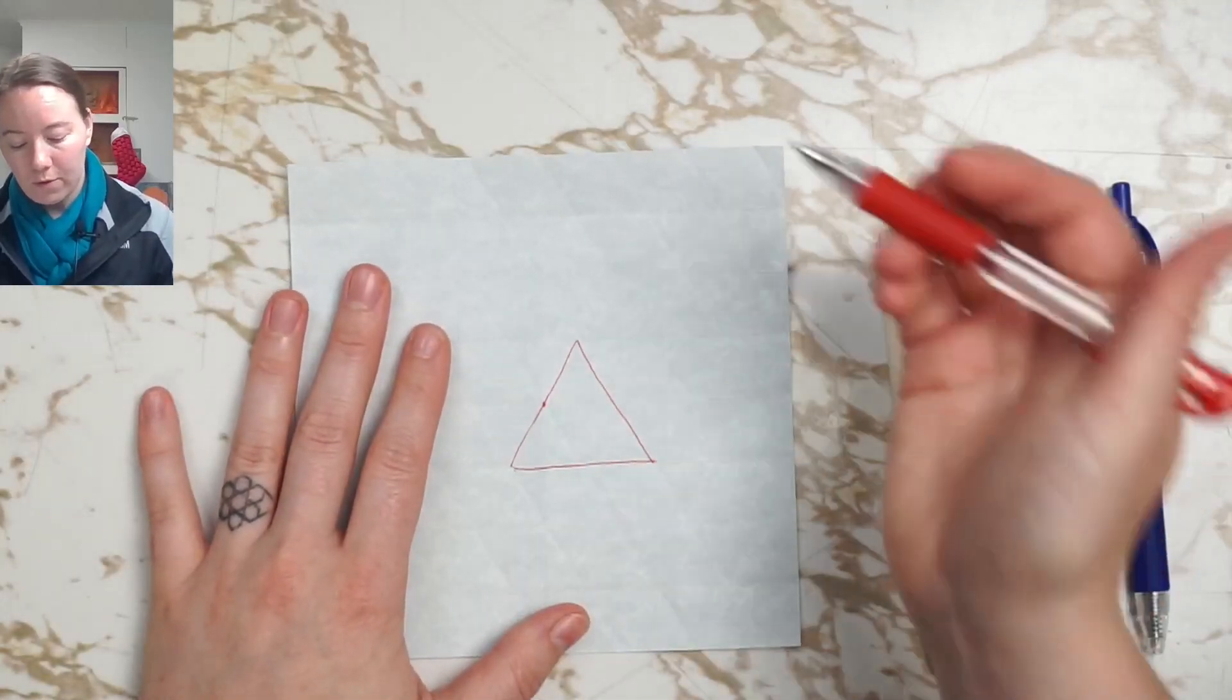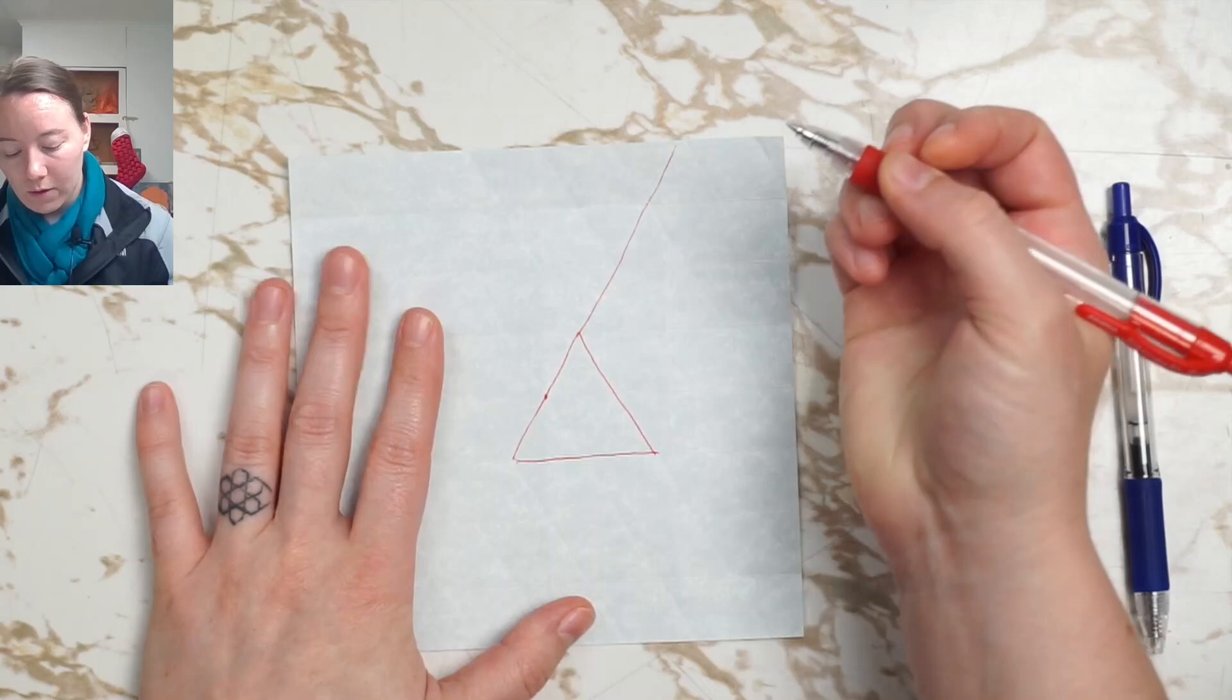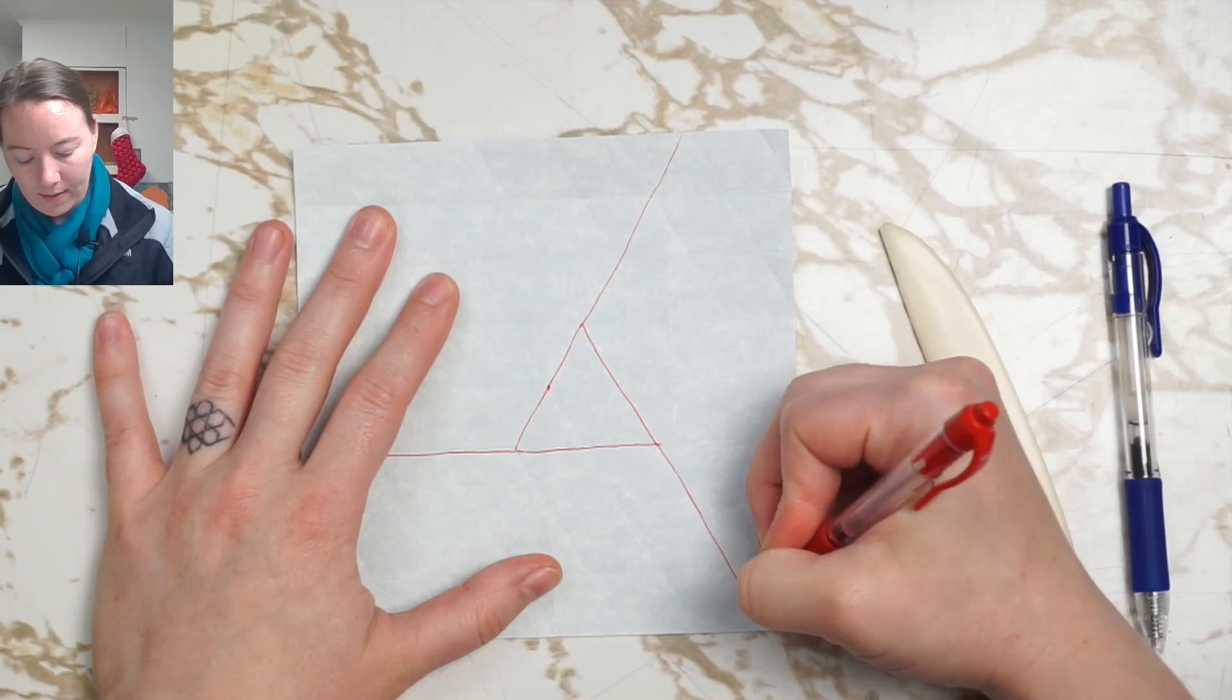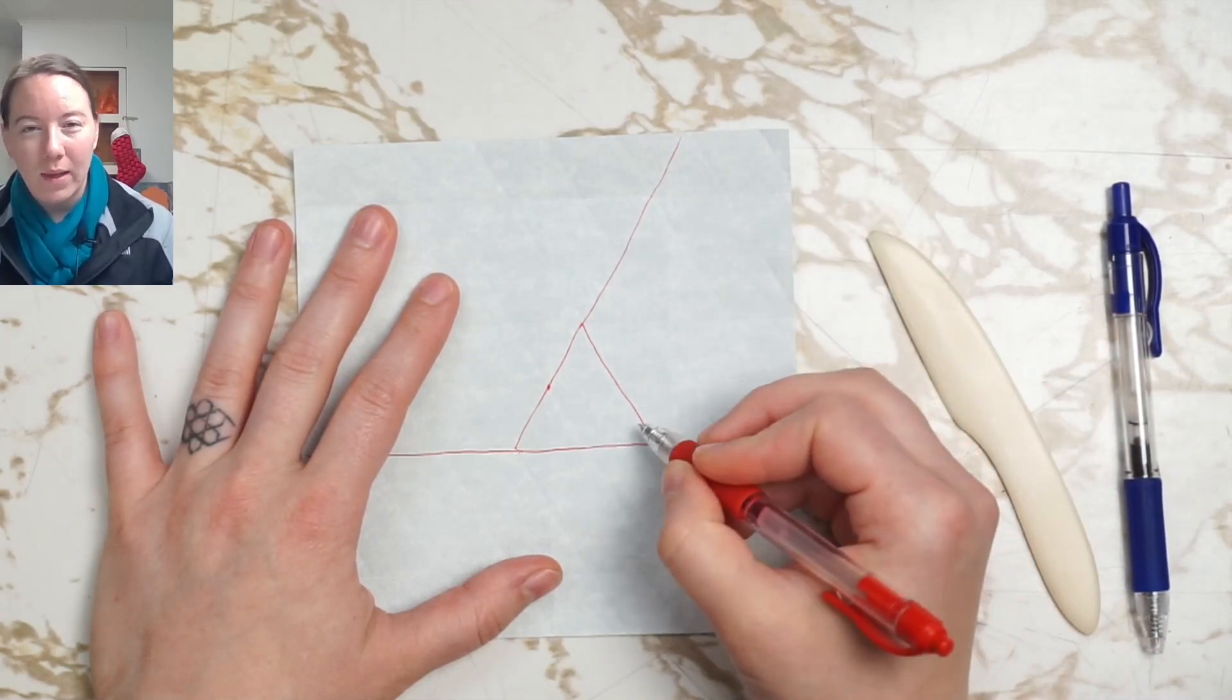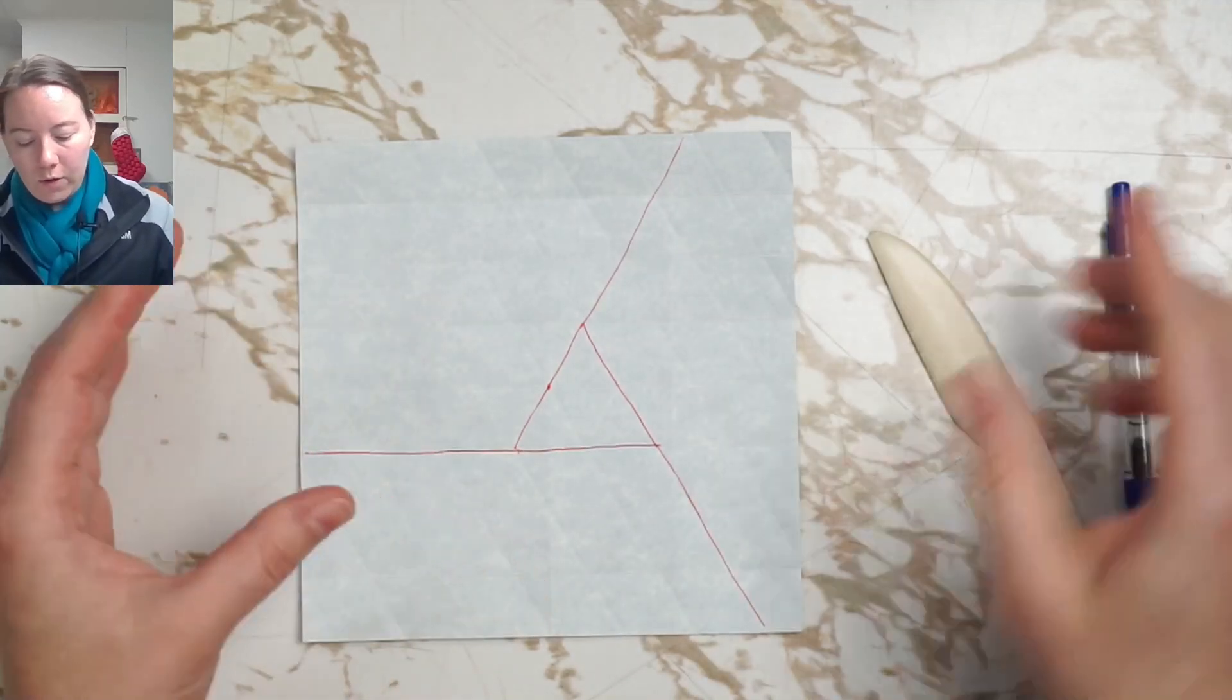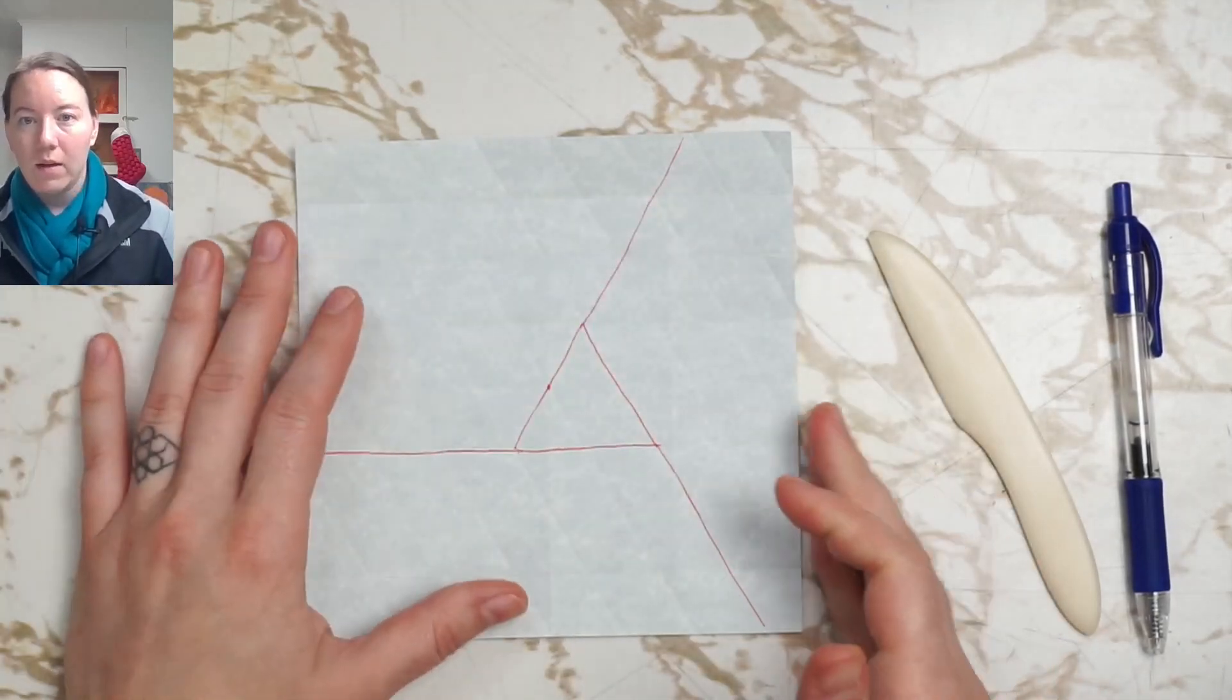So from this triangle I'm going to extend the edges to the edge of the paper so that I'm only extending the edge in one direction. I'm only extending one of the edges at each corner. So this is going to set up a rotationally symmetric start.